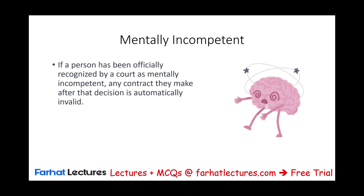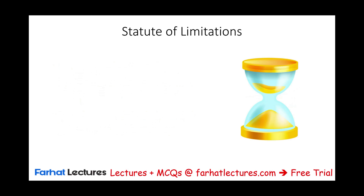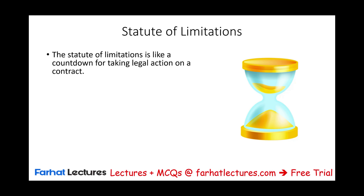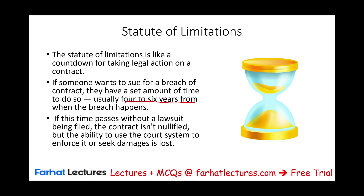If a person has been officially recognized by a court as mentally incompetent, any contract they make after that decision is automatically invalid. This protects individuals who lack the capacity to fully understand what they're entering into. If someone has been declared mentally incompetent by a court, they can sign anything and get out of it. Also, statutes of limitations: this is like a countdown for legal action on a contract. If someone wants to sue for a breach, they have a set amount of time — usually four to six years from when the breach happened. If that time passes without a lawsuit being filed, the court can no longer help you enforce it.